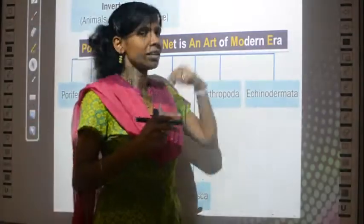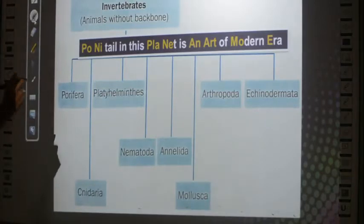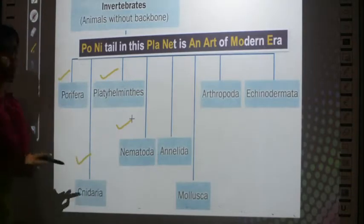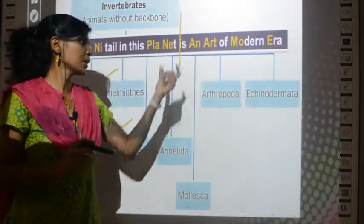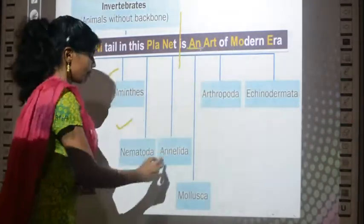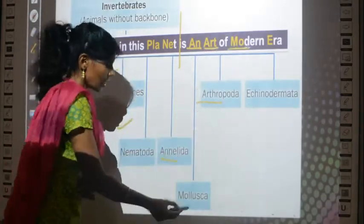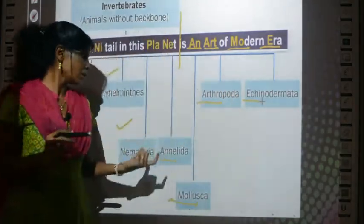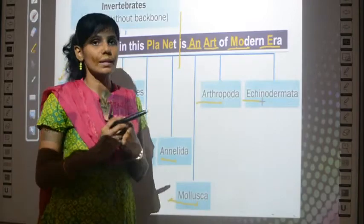In our previous class we studied porifera, platyhelminthes, cnidaria, and nematodes. In this class we are going to learn about the remaining four groups: annelida, arthropoda, mollusca, and echinodermata - using the mnemonic 'art of modern era': A for annelida, art for arthropoda, modern for mollusca, and E for echinodermata.